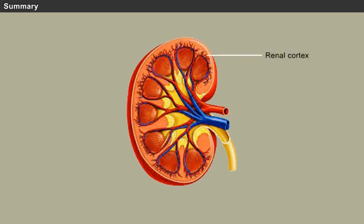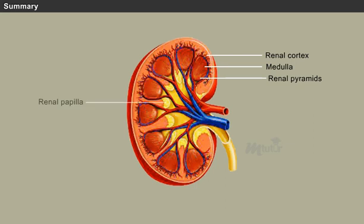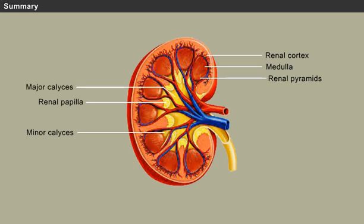The kidney contains an outer area called the renal cortex and an inner region called the renal medulla. In the medulla, five to eight renal pyramids are divided by renal columns. Each pyramid ends at a renal papilla, which drains into a minor calyx. Many minor calyces join to form a major calyx, and all major calyces connect to the single renal pelvis, which connects to the ureter.